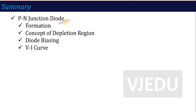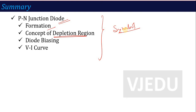This is all about your p-n junction diode — how it forms, the concept of the depletion layer, the impact of forward and reverse bias, and the V-I curve. In the next lecture we will talk about the p-n junction diode symbol, the V-I curve showing how current varies with voltage, and the diode equation. We will see you in the next lecture, thank you.